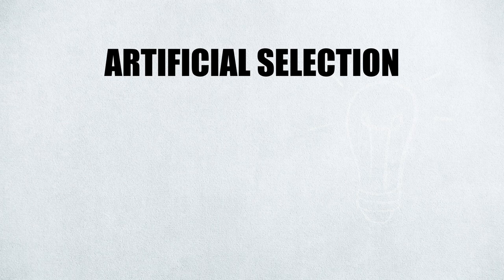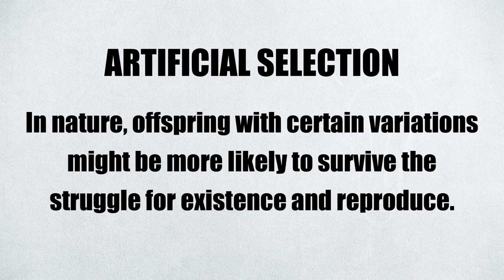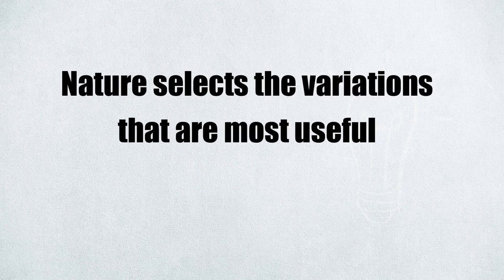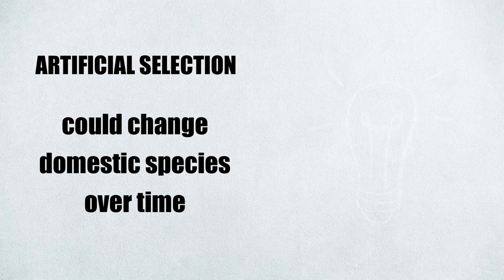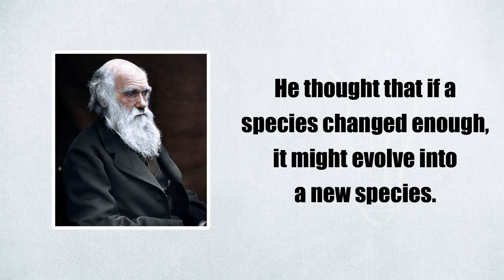From artificial selection, Darwin knew that some offspring have variations that occur by chance and can be inherited. In nature, offspring with certain variations might be more likely to survive the struggle for existence and reproduce. If so, they would pass their favorable variations to their offspring. Darwin coined the term fitness to refer to an organism's relative ability to survive and produce fertile offspring. Nature selects the variations that are most useful — therefore, he called this natural selection. He inferred that if a species changes enough, it might evolve into a new species.